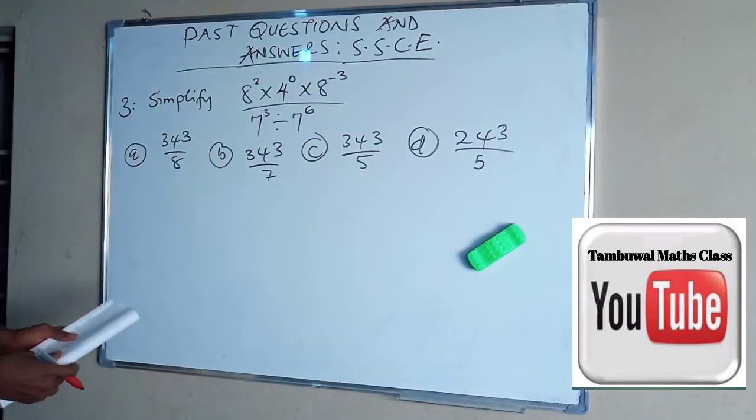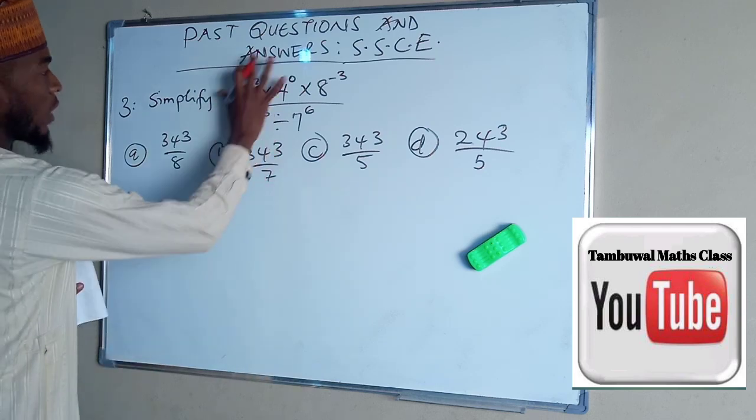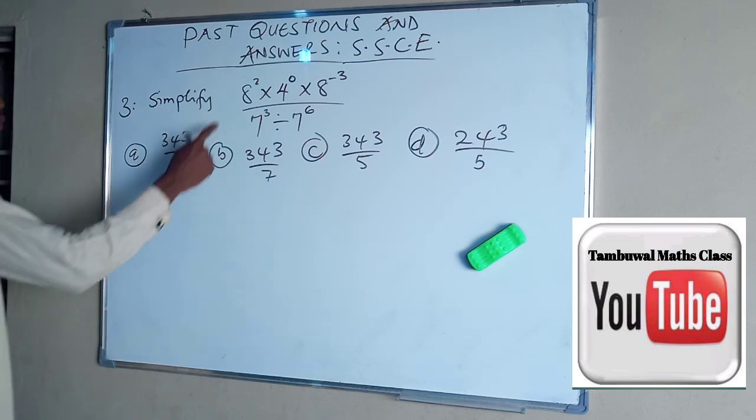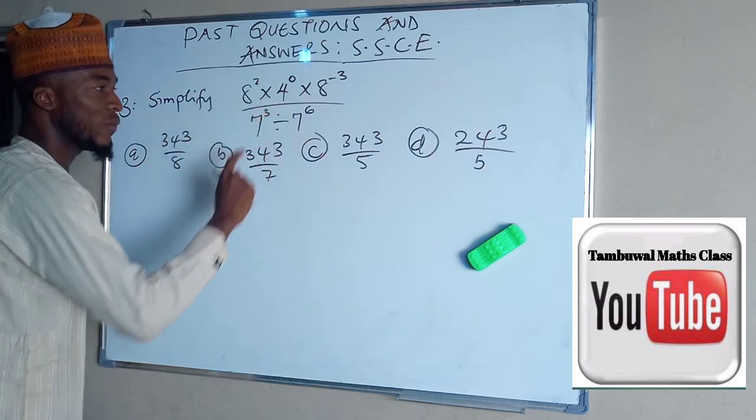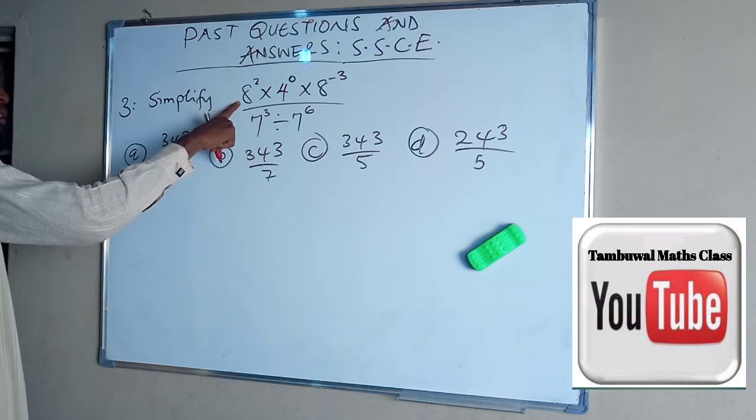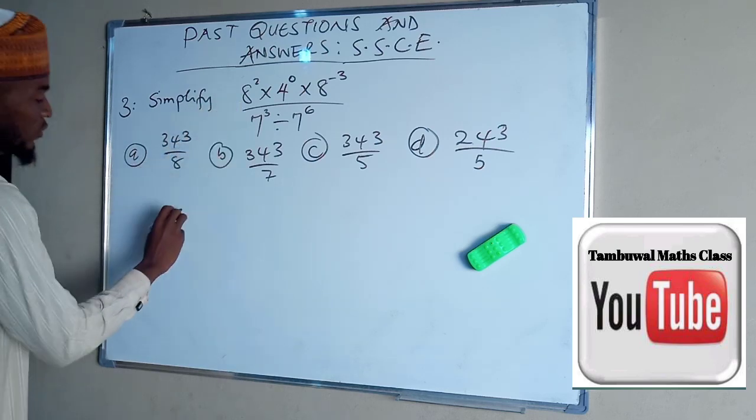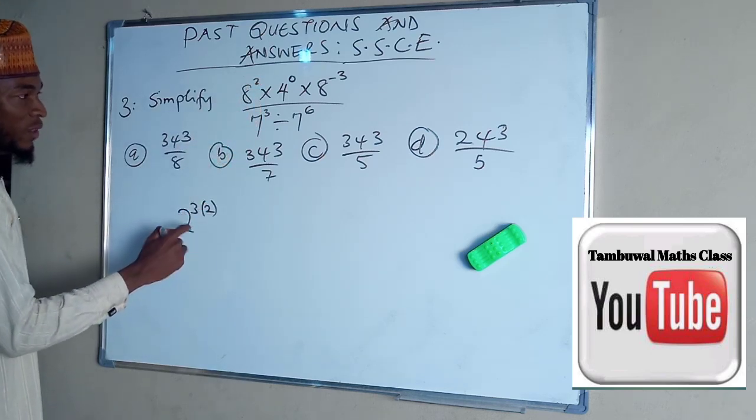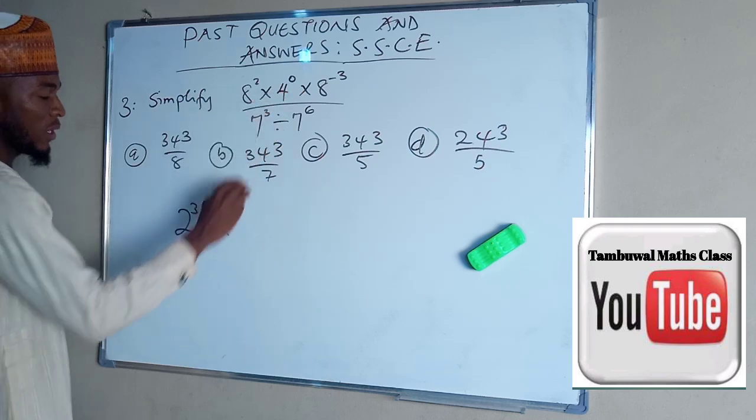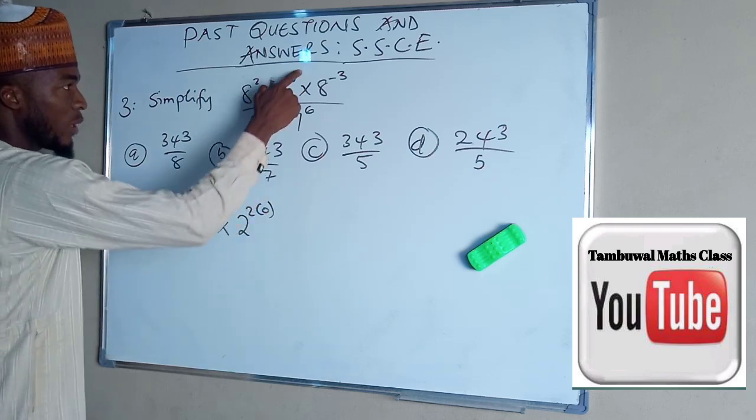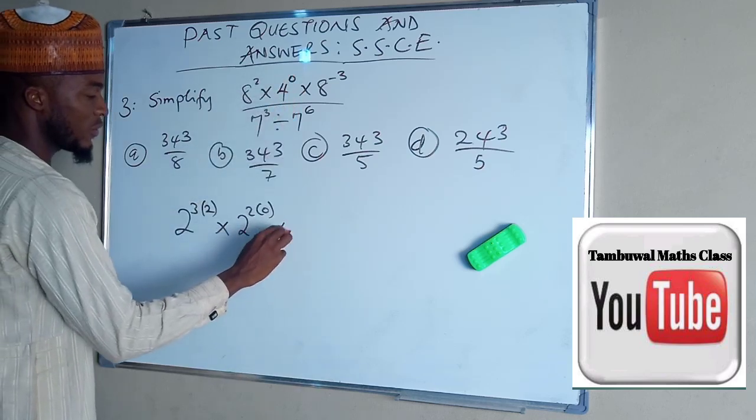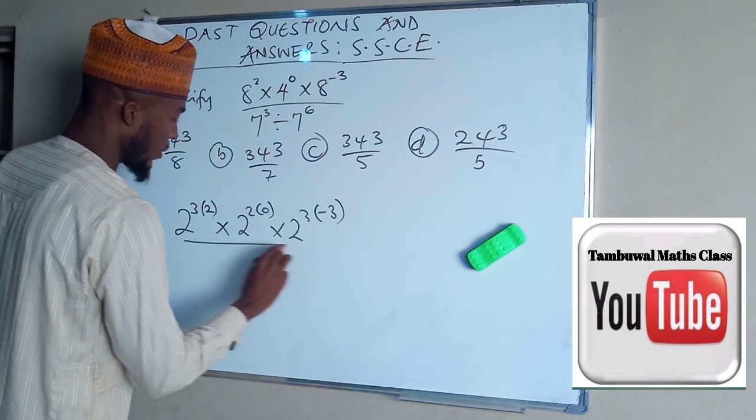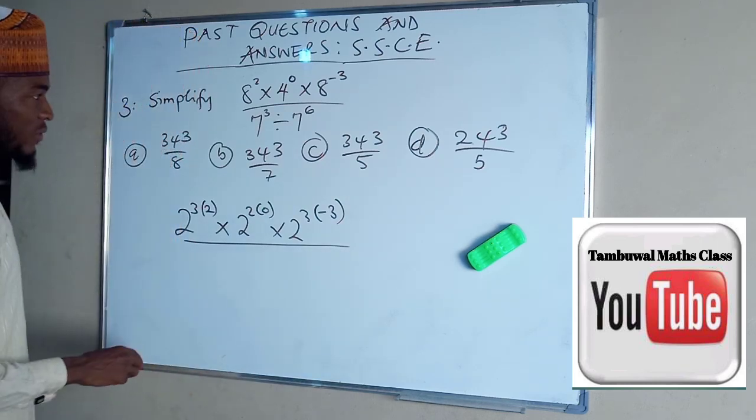This is question number 3, which is an indices. We are asked to simplify this and these are the options given. We are going to make sure each one of them have equal base. So we know that 2 power 3 is 8, 2 power 3 is 8. But already we have another 2 there. That 2 will multiply this 1. So we have 2 power 2 multiplied by 0 times 2 power 3, which is 8, multiplied by negative 3.